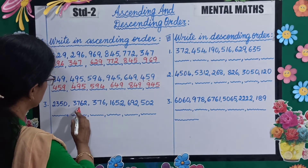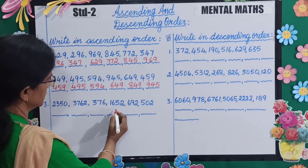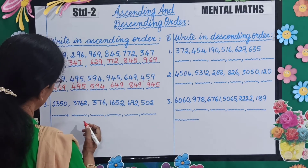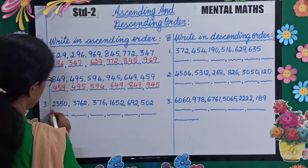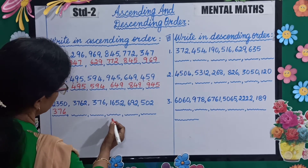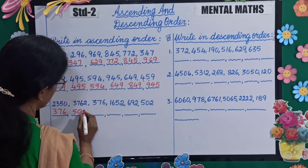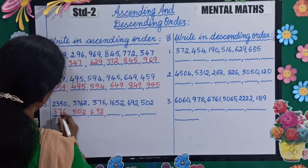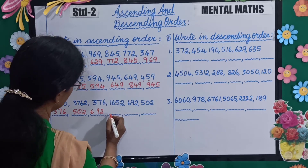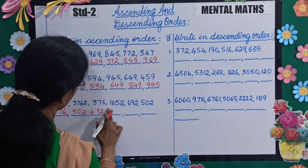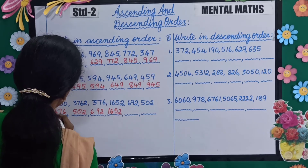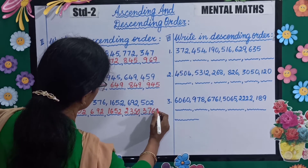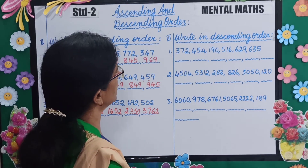Next set: 2350, 3762, 376, 1652, 692, and 502. Which is the smallest number? 376. Next is 502, very good. Then 692. Next is 1652, then 2350, then 3762.